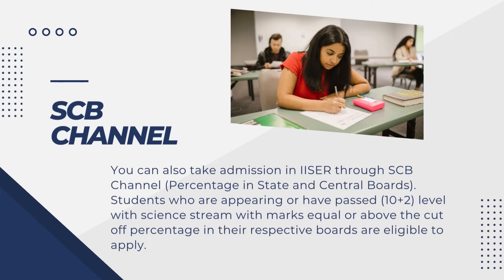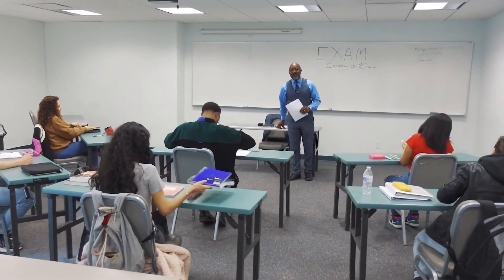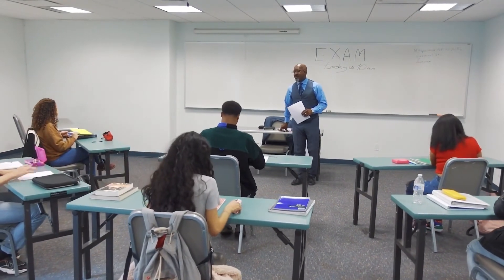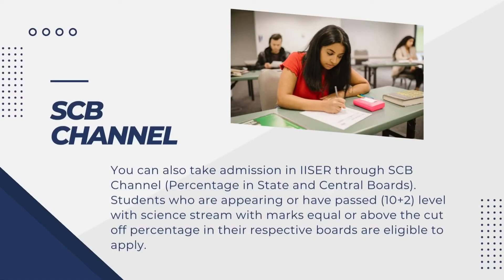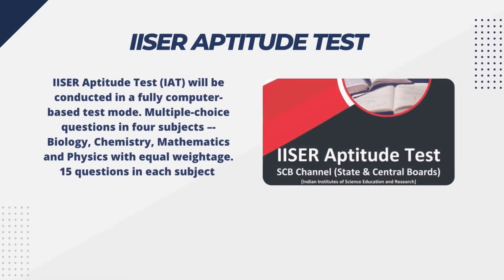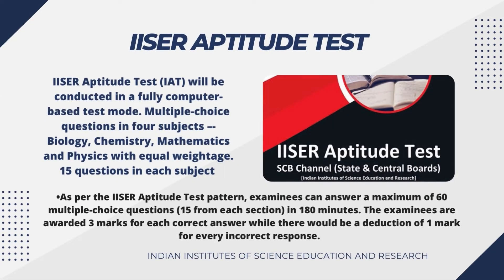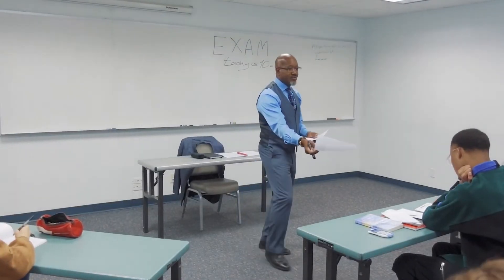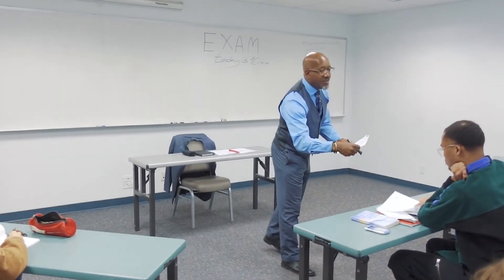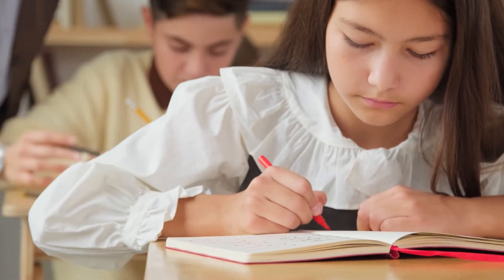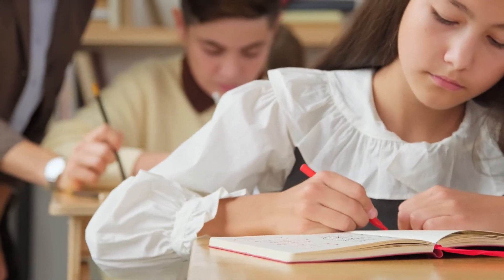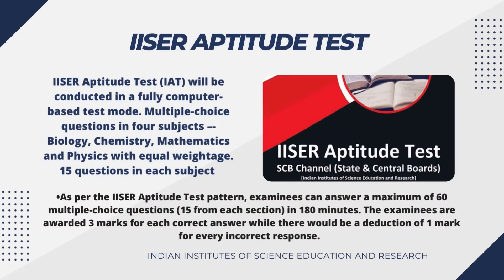For SCB, candidates must have passed 10+2 or an equivalent level exam with the science stream, and a merit list will be released. If you are applying under the SCB channel, you also have to appear for an exam known as IAT — that is the ISER Aptitude Test. This IAT exam is an online MCQ-based exam. The marking pattern is: each correct answer is awarded three marks, unanswered questions get zero, and incorrect answers get minus 0.75 marks.